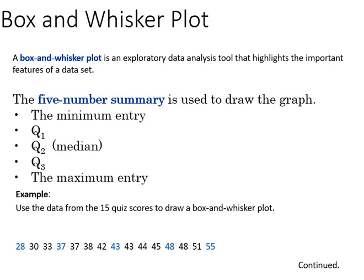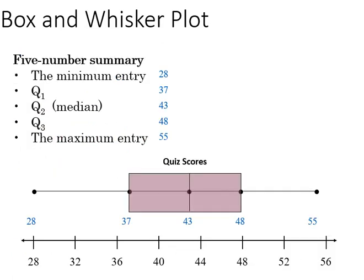The box and whisker plot gives us a visual of the quartiles and the interquartile range, where we have the q1, q2, q3, the minimum and maximum entry, and here's what it looks like.